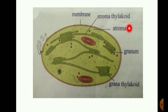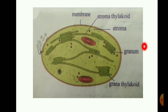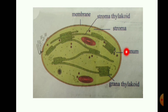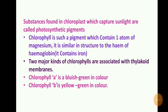Starch is formed. This group of thylakoids is called granum. Granum traps solar energy in thylakoids, and the thylakoids are found in the stroma. This is the chloroplast with its outer membrane.